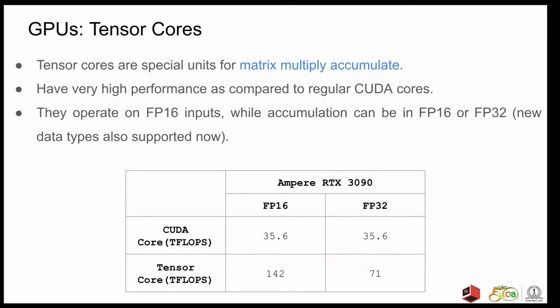Tensor cores are special units for matrix multiply accumulate or the MMA operation which is essentially multiply accumulate on small matrices. They have higher performance than regular CUDA cores and hence are a suitable choice for accelerating machine learning and deep learning workloads. They originally operated on FP16 inputs way back when they were introduced in the Volta microarchitecture. And the accumulation was set to FP16 or FP32 depending upon the use case. But there are new data types like Int8 and BF16 etc which are supported now. Just for reference, the table shows the performance comparison between CUDA cores and tensor cores on the Ampere RTX 3090 Ti.